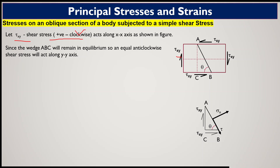Wedge ABC is taken under consideration so we can draw the free body diagram to evaluate what stresses act on the oblique plane at angle theta. To keep wedge ABC in equilibrium when tau_xy acts in the clockwise direction, another couple of shear stress tau_xy will act in the anti-clockwise direction along the y-axis, as per equilibrium theory.